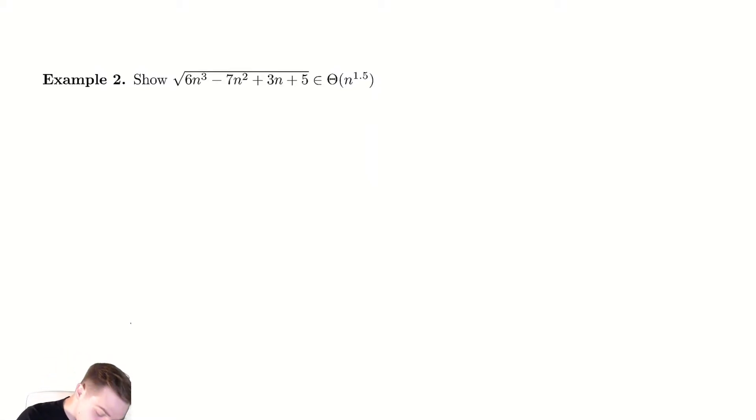So we begin by looking at the given function and we're going to show that it is in big O of n to the 1.5. To do that, start with the original function.